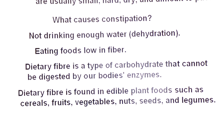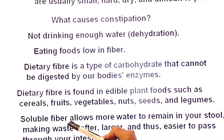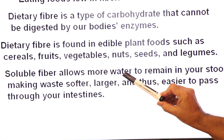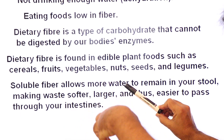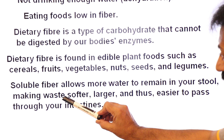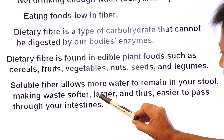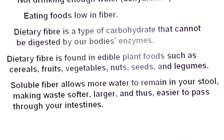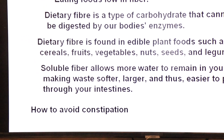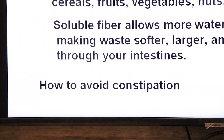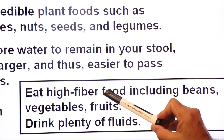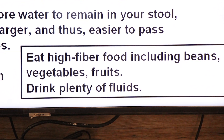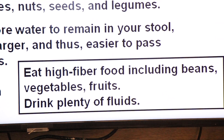These should be included in the diet. Soluble fiber allows more water to remain in your stool, making waste — undigested food — softer, larger and thus easier to pass through your intestine, which reduces constipation. To avoid constipation, eat high-fiber foods including beans, vegetables, fruits, and drink plenty of fluids.